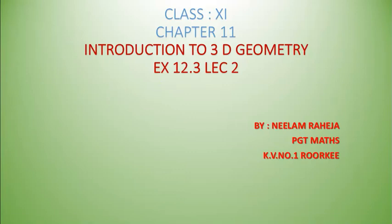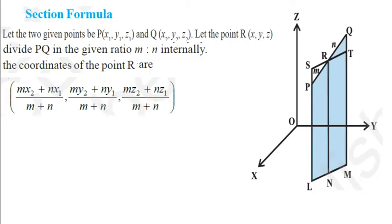Good morning students, today we will do the last two exercises of the geometry. Now the section formula: suppose we have two points (x1, y1, z1) and (x2, y2, z2) in space, and a point R divides the line segment PQ in the ratio m:n.